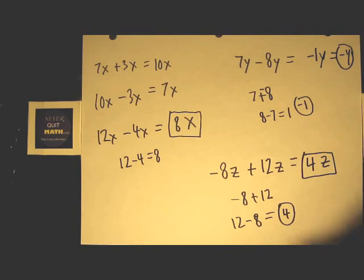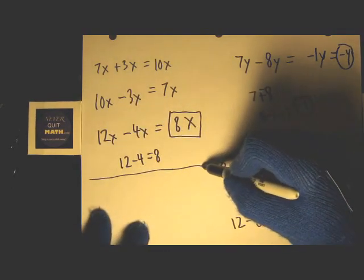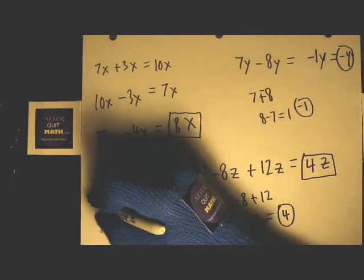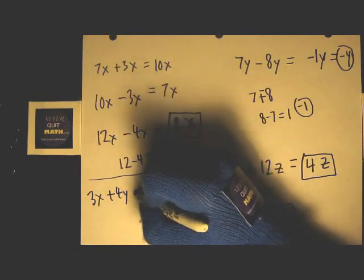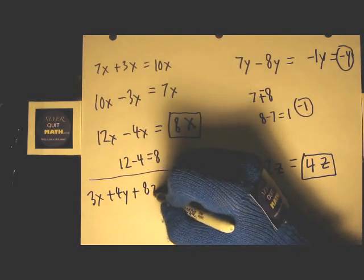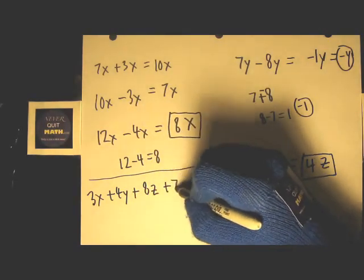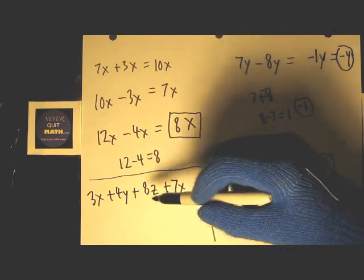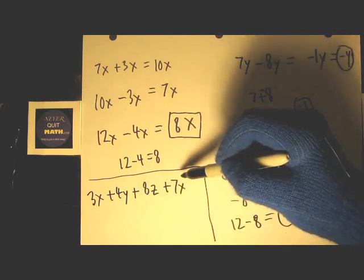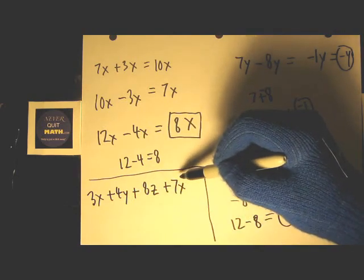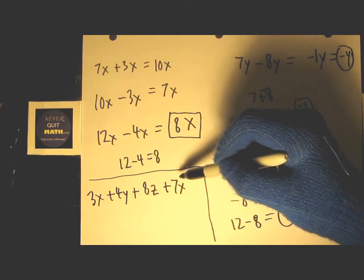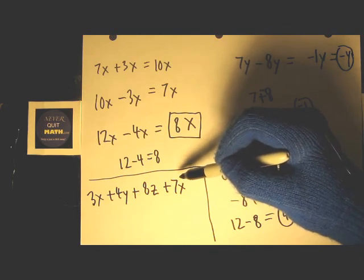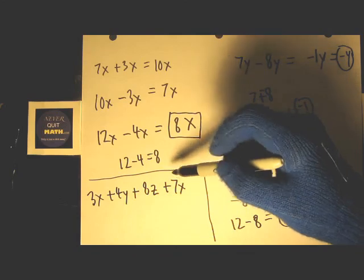Let's try a different example. If I got 3x plus 4y plus 8z plus 7x, I've got different letters here. What you do is put all the apples together, all the oranges together, and all the bananas together. If they give you 12 letters, you still got to have 12 different groups.